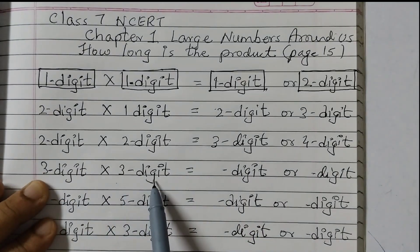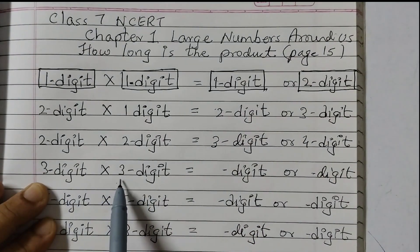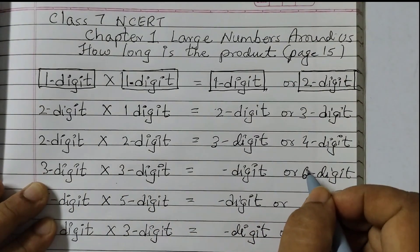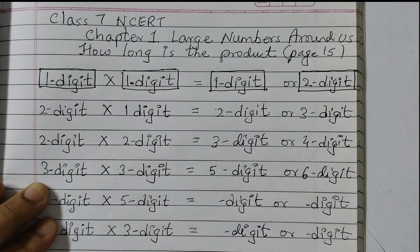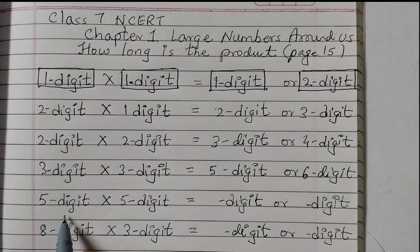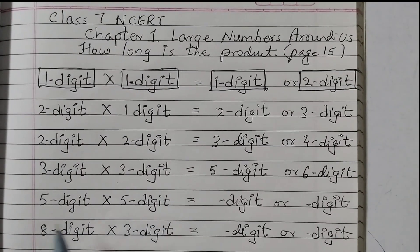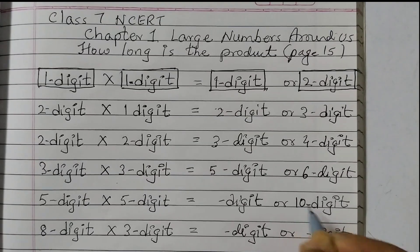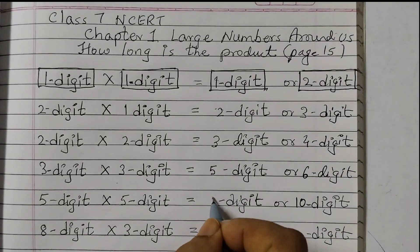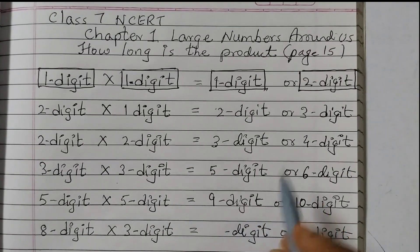3 digit into 3 digit. So 3 plus 3 is 6. We can have a 6 digit number or 1 less, which is 5 digit number. 5 digit into 5 digit. 5 plus 5, 10. So we can have a 10 digit product or a 9 digit product. Just subtract 1 from here.